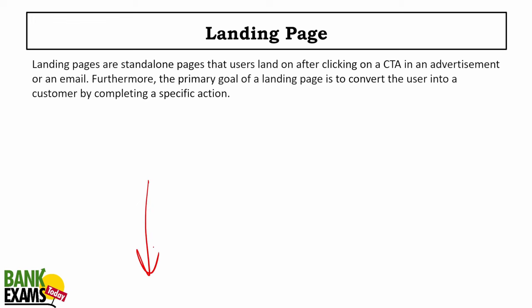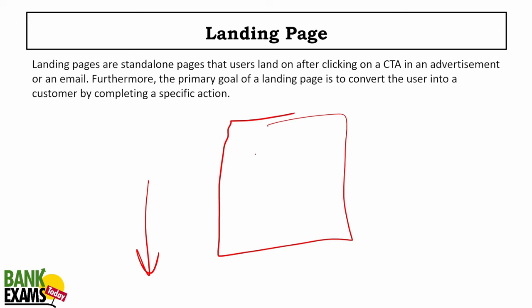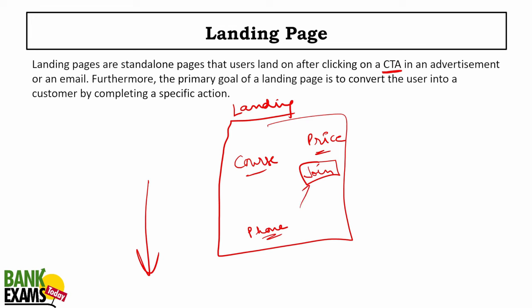A landing page is the page you reach after clicking a link in the description for a course. You can read the course description, see the price, and find the WhatsApp number. A landing page is where you go after clicking a CTA button — it's the location where you take a desired action. The goal of our landing page is to get registration, take a trial, and then join the course.